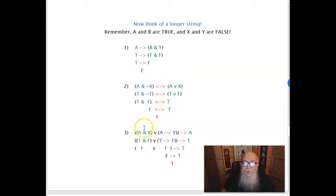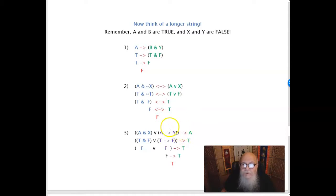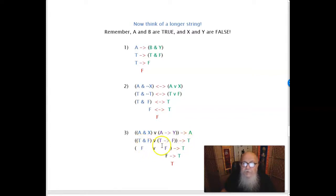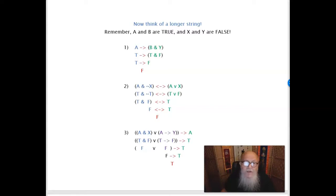Here's another string to interpret. Always identify the main operator first — this is a conditional with the main operator being the outermost 'then.' The antecedent is complex: we start inside the innermost parentheses. True and false is false; true then false is false; false or false is false. So false then true is true. It's like a tea party in Wonderland!